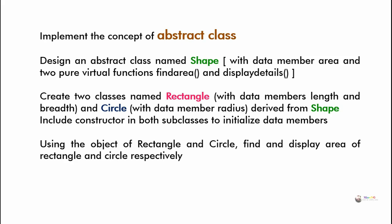In this program we have three classes. The first base class is Shape, from which we derive two subclasses: Rectangle and Circle. Shape is an abstract class because it contains at least one pure virtual function. We include two pure virtual functions — find_area and display_details — in the Shape class, making it compulsory to override these methods in the derived classes Rectangle and Circle.